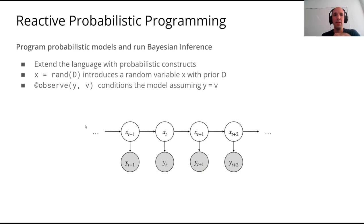We are interested in probabilistic programming, meaning that we need to deal with distributions. We will use the run function in order to deal with distributions of random variables X, and another macro, observe, which will condition the random variable Y to be equal to a value V.